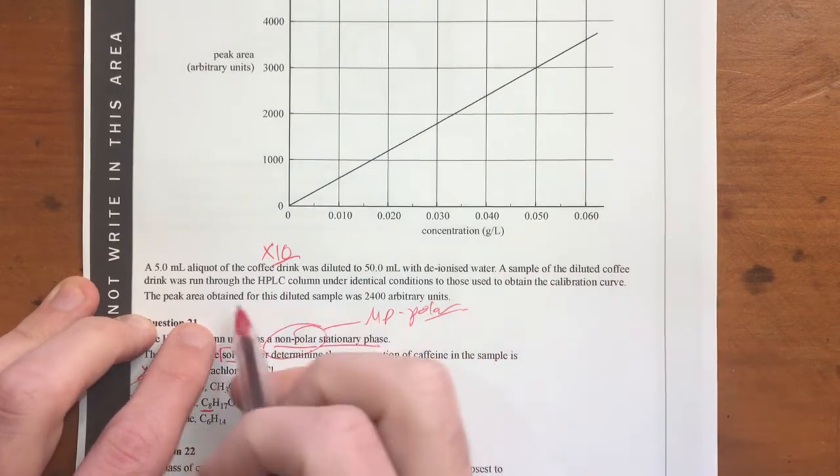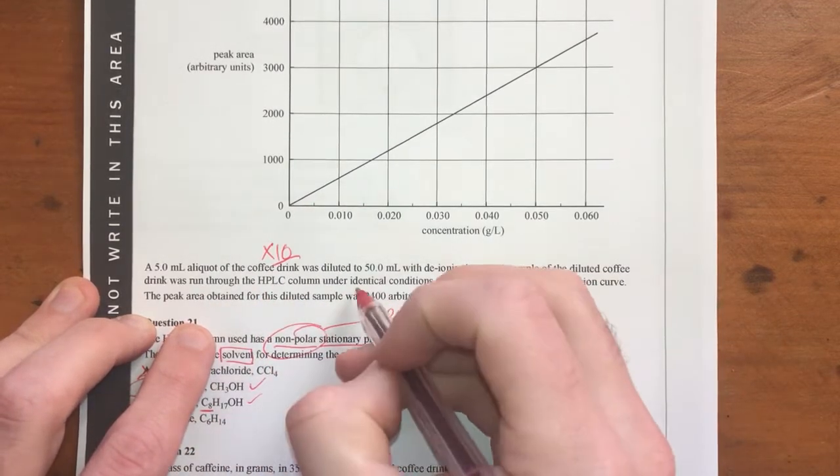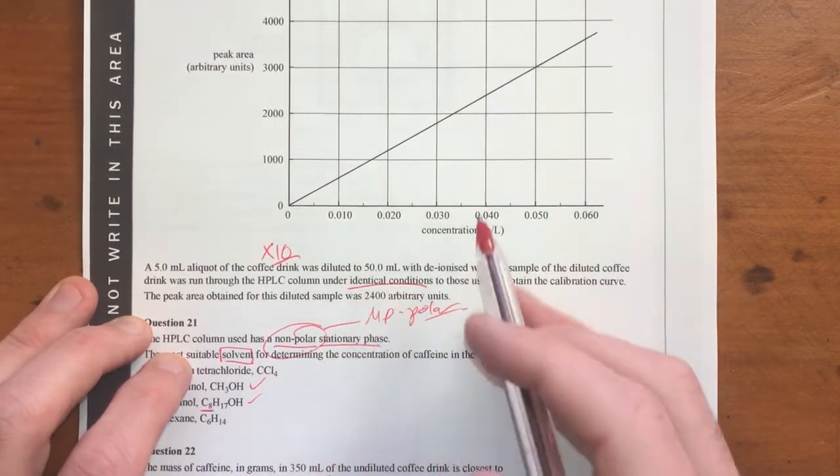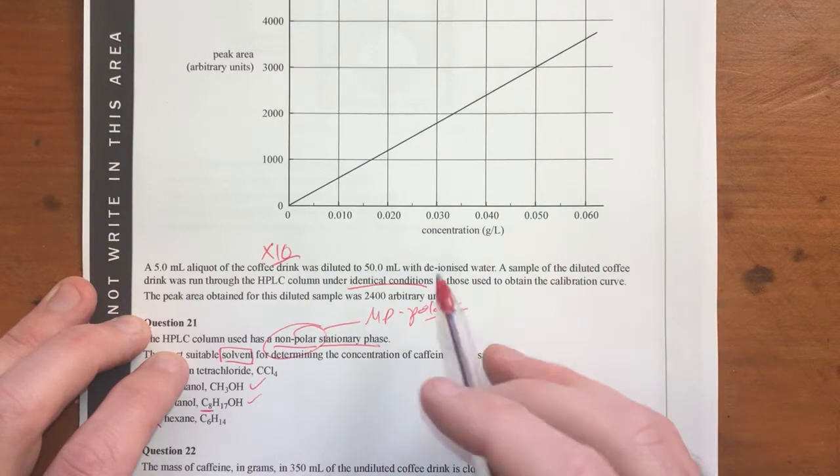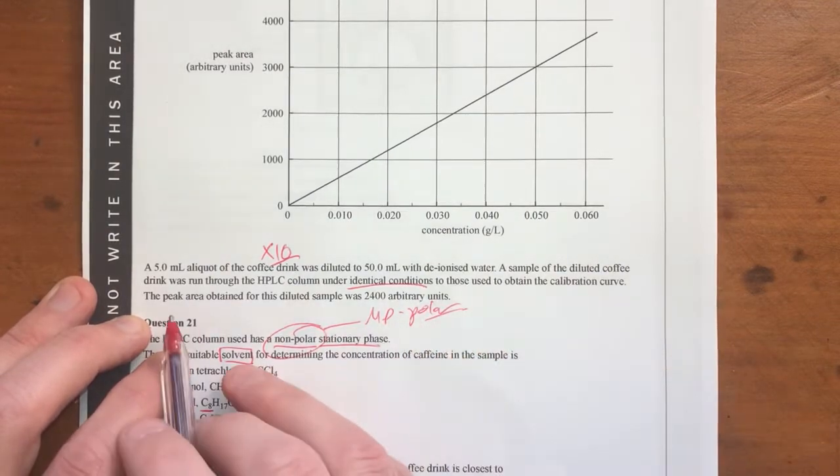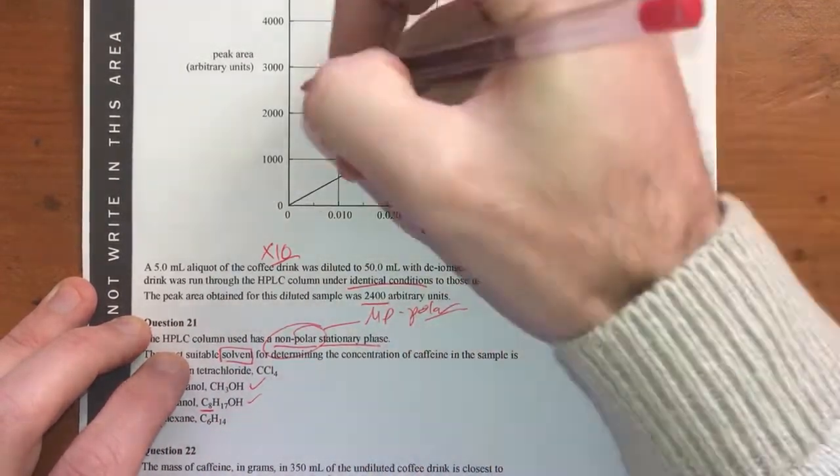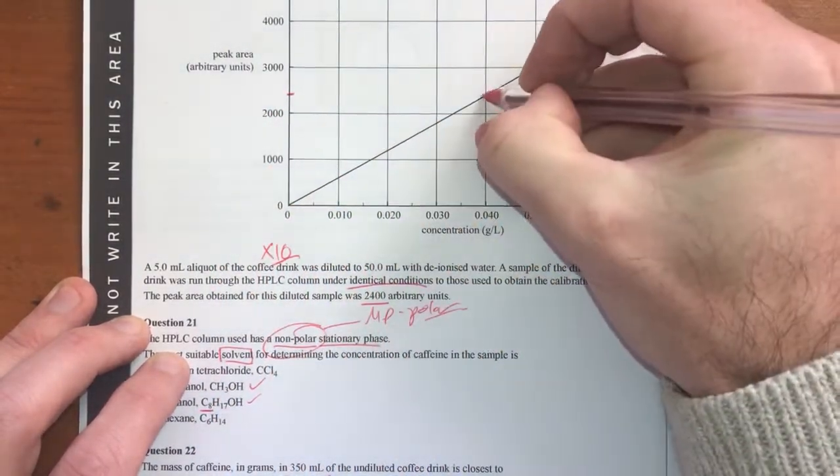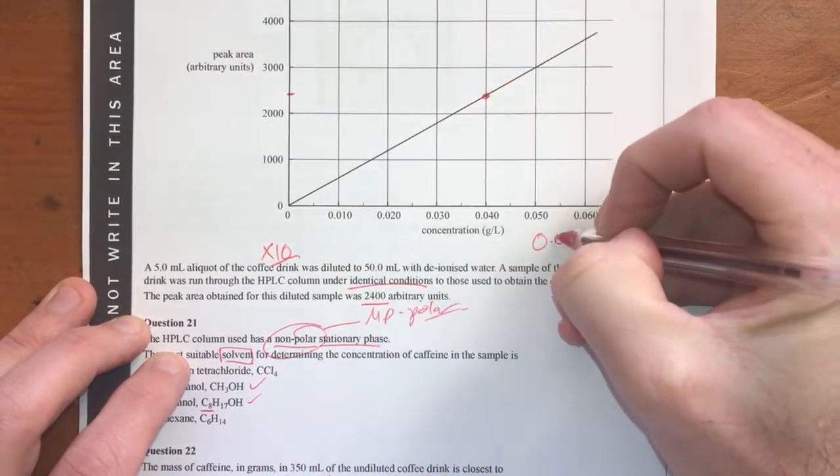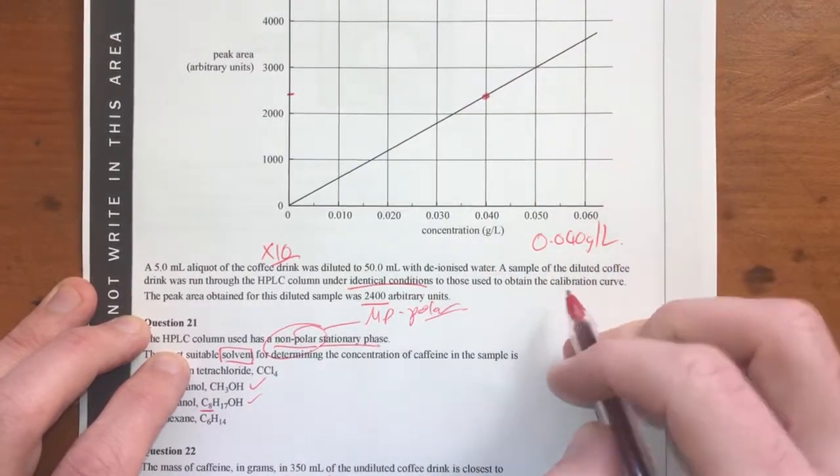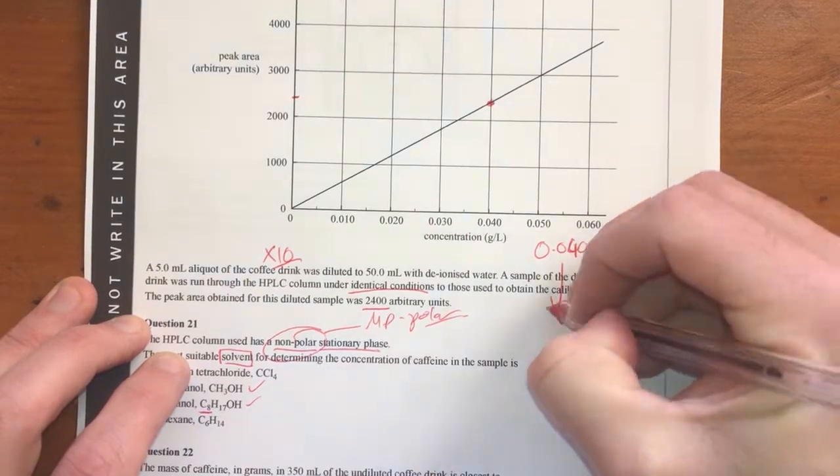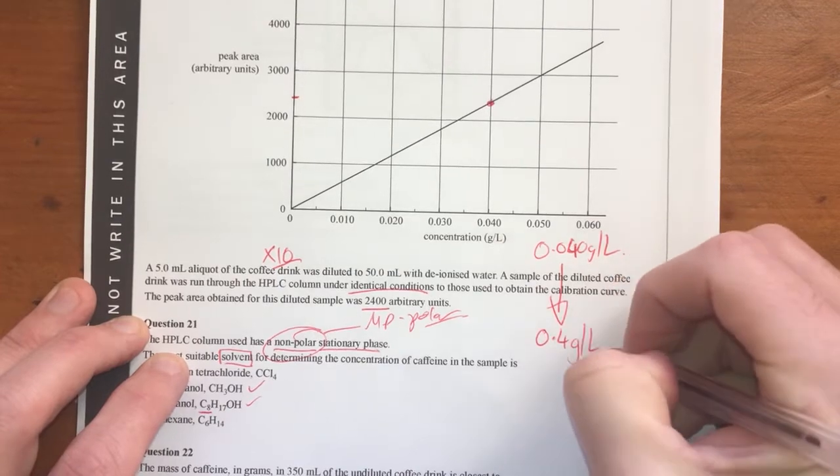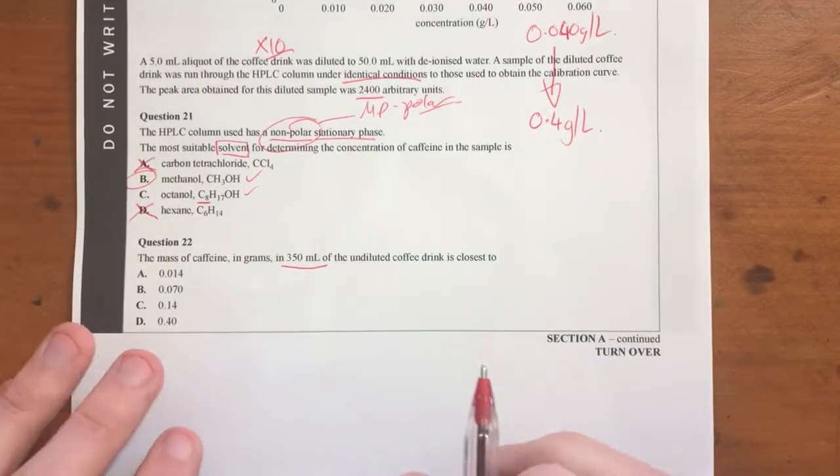Added to the HPLC column under identical conditions. That means we can use the graph. If it wasn't under the identical conditions, we wouldn't be able to use our graph at all. But our peak area was 2,400. So 2,400 sits about here. So if I follow it along, it should be about here. So it should be about 0.04 grams per litre. That's in my diluted coffee drink. So therefore factoring in this 10 by dilution gives me 0.4 grams per litre. And then I go back and look at what my question was again.